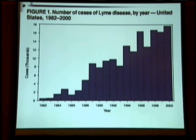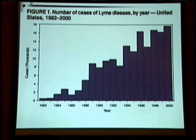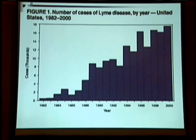Starting in 1982 — that's in thousands on the vertical axis — there were less than 1,000 cases reported. By 2000, that number was pushing 18,000 cases. As you can see from the steepness of that chart, Lyme disease is definitely on the rise.